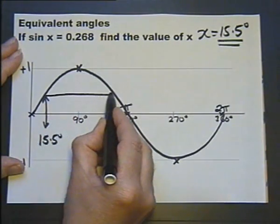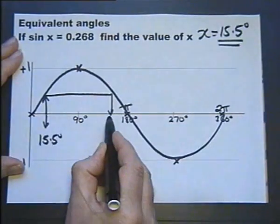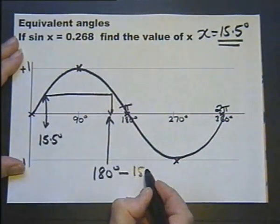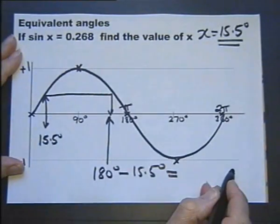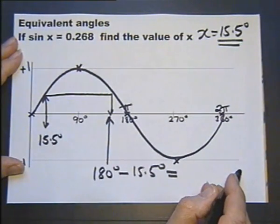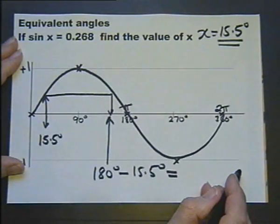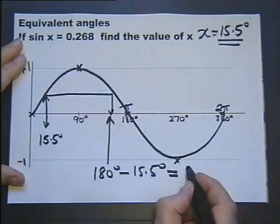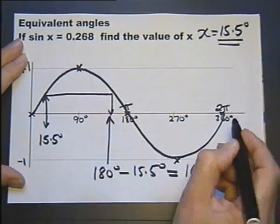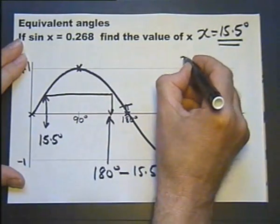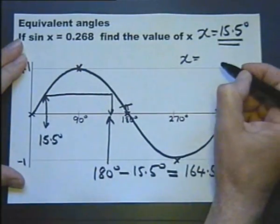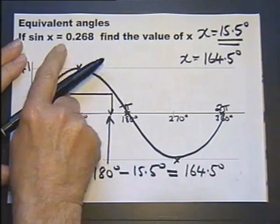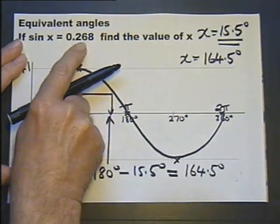That is 15.5 degrees, therefore this angle here of 180 minus 15.5 degrees gives another value with the same sine, another angle with the same sine of 0.268. So we've got our two answers of 15.5 degrees and 164.5 degrees when the sine of the angle is 0.268.